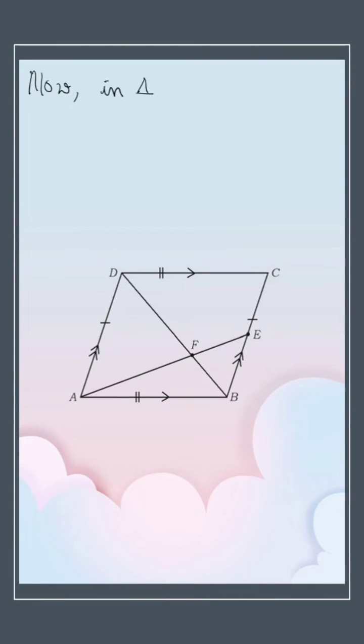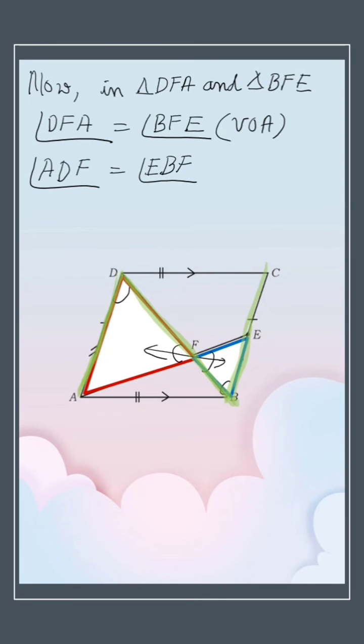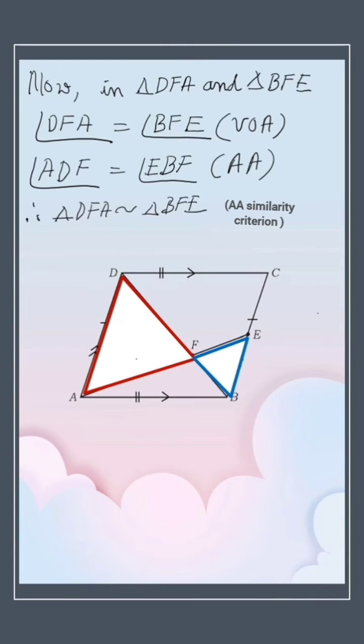Now in triangle DFA and BFE, angle DFA is equal to angle BFE, while vertically opposite angles. Angle ADF is equal to angle EBF, while AD parallel BC, BD is transversal, so alternate angles. Therefore, triangle DFA is similar to triangle BFE. Why? Because of angle angle similarity criterion.